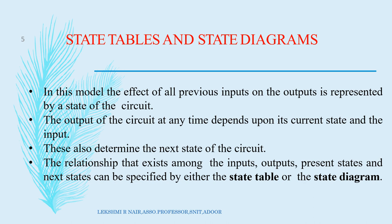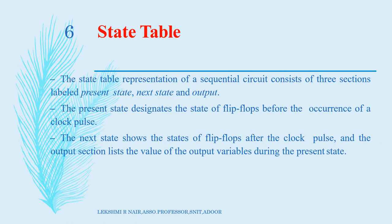State table and state diagram are the diagrammatic or graphical representation of all the relevant information about a circuit such as input, output, present state, next state, etc. Now, what is the state table? The state table represents the sequential circuit and consists of three sections: the present state, next state and the output. The present state designates the state of the flip-flop before the occurrence of the clock pulse. The next state shows the state of the flip-flop after the clock pulse. The output section lists the value of the output variable during the present state.